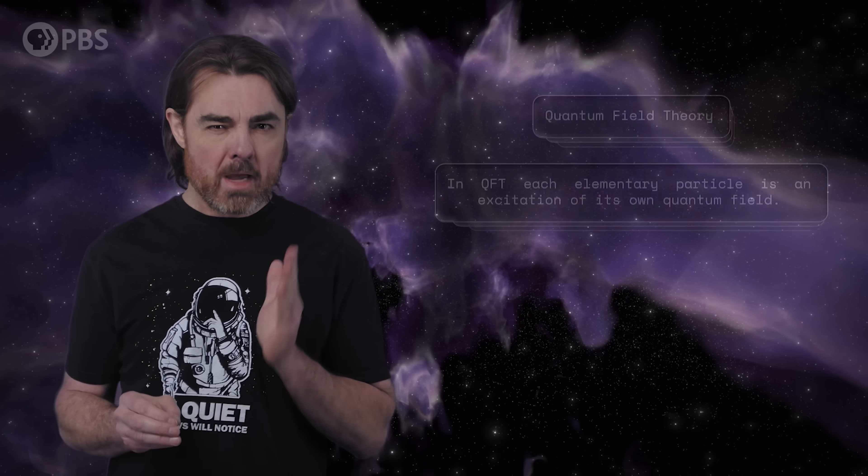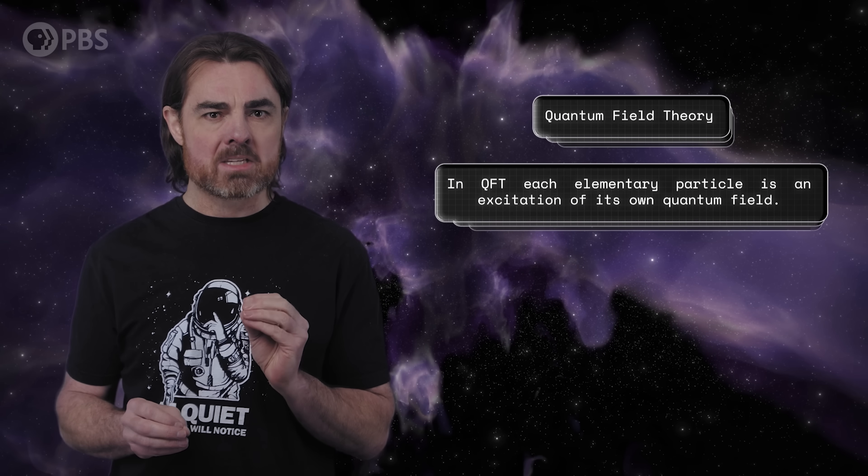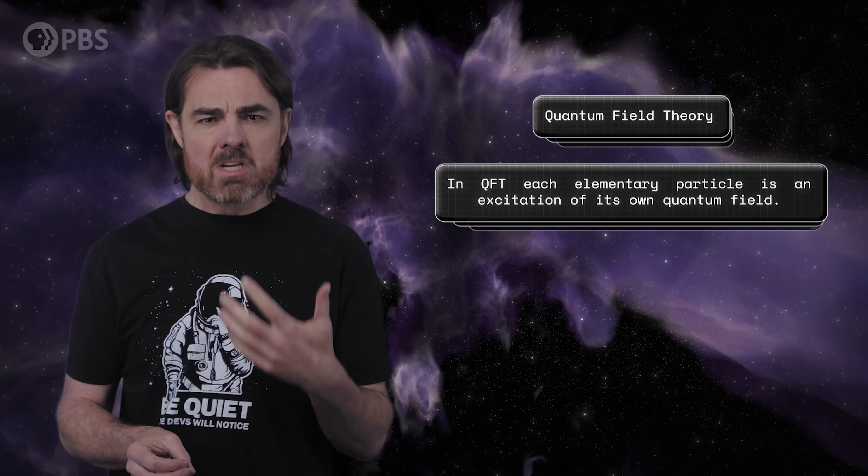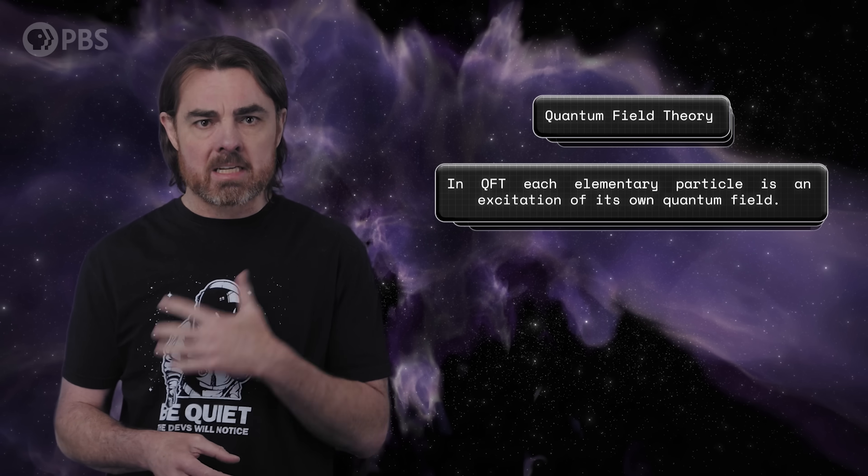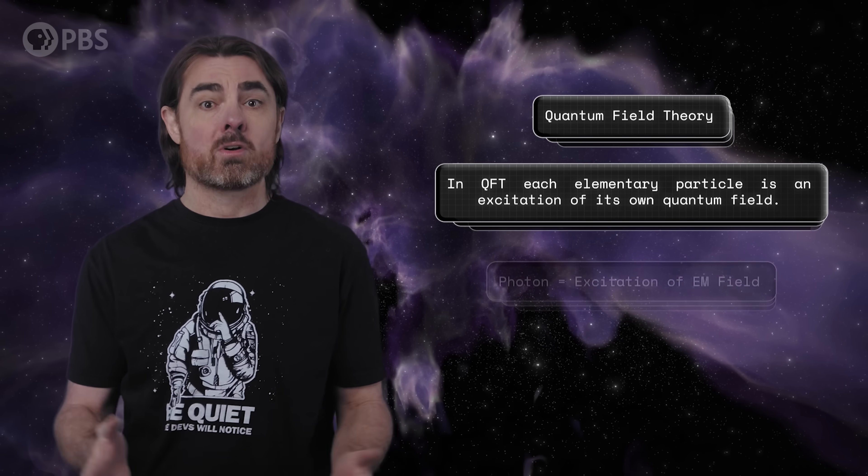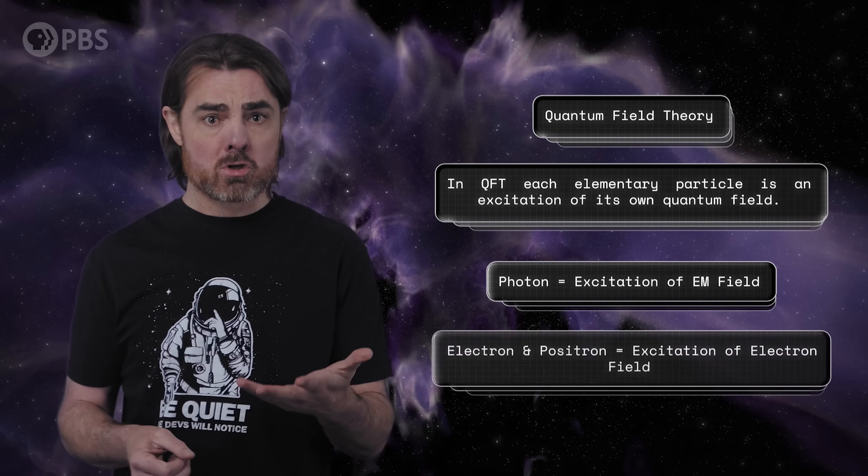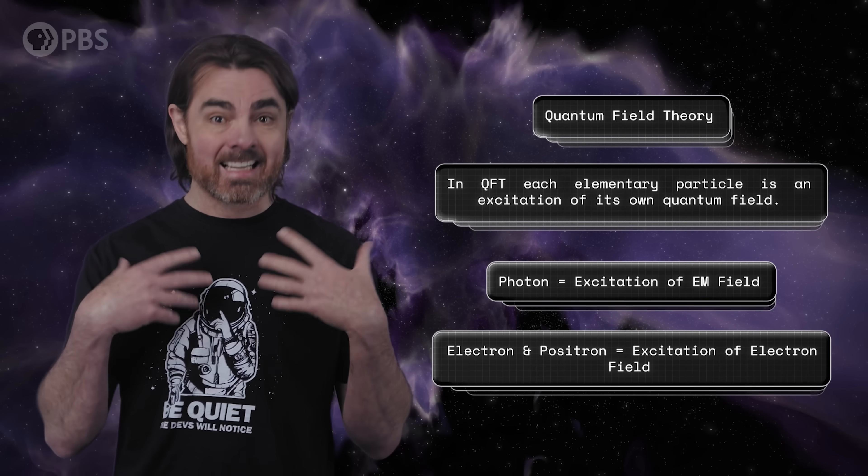What does our zoom in look like when we switch to quantum mechanics, or more precisely, quantum field theory? In QFT, we describe electromagnetism in terms of the activity of a quantum field. And each elementary particle is an excitation in its own quantum field, so the photon is an excitation of the EM field, and the electron and positron are excitations of the electron field.